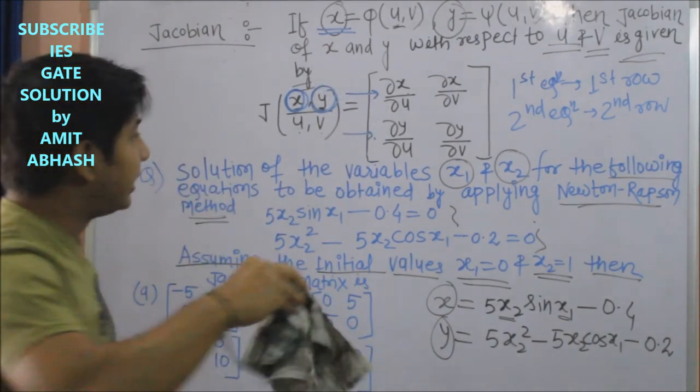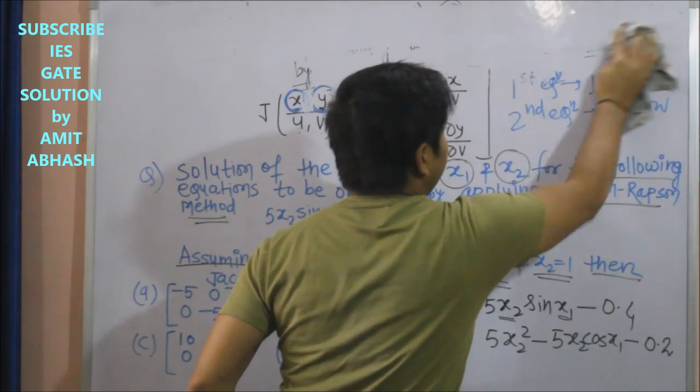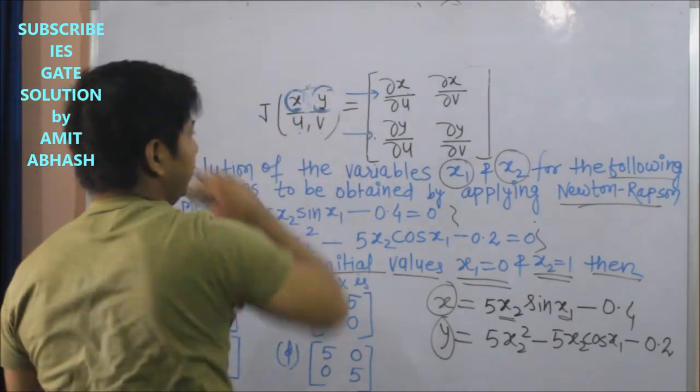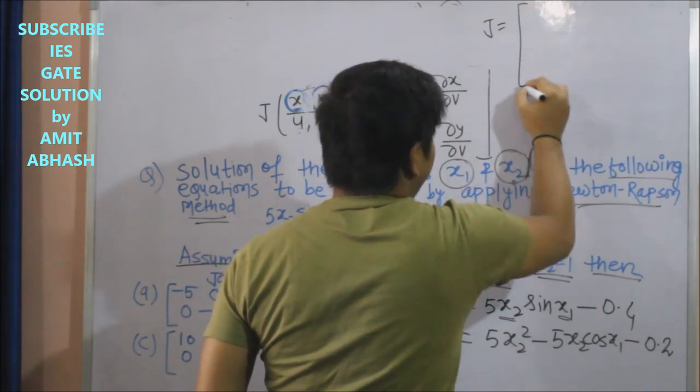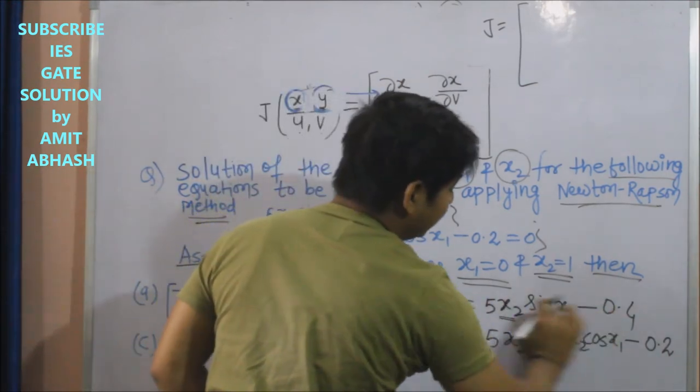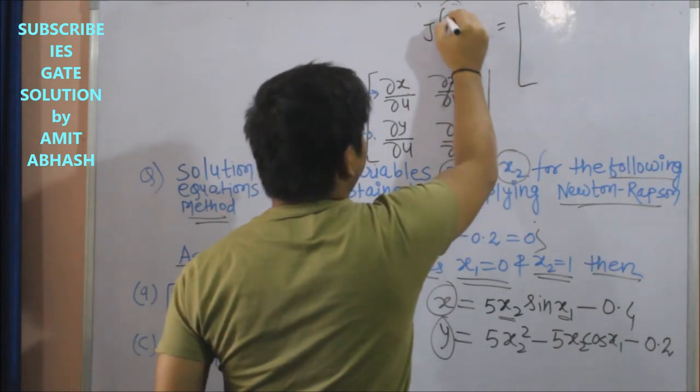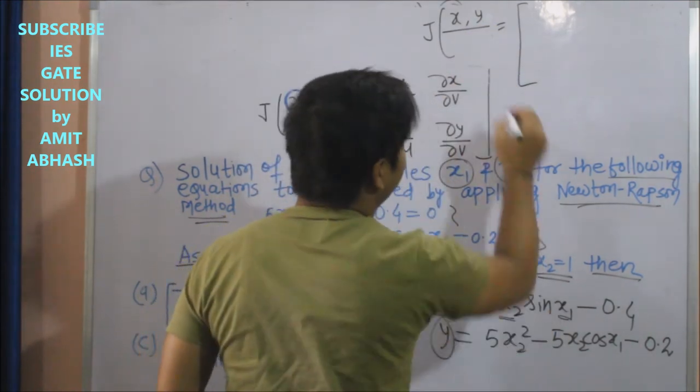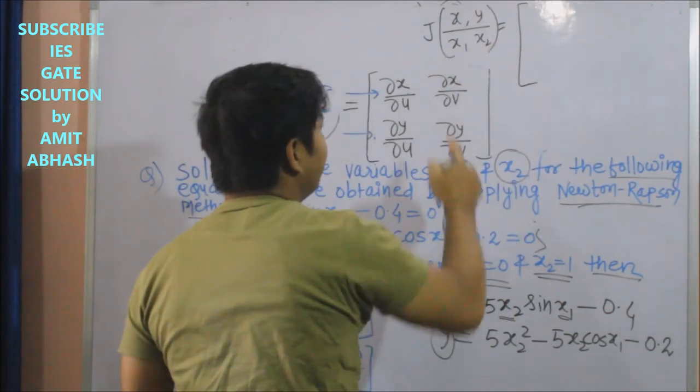So we can write this type: Jacobian of x and y - yeh toh rahe gai - and in place of u or v we have x1 or x2. This is x1 x2. So now how will I write this? This is del x upon del x1, del x upon del x2.